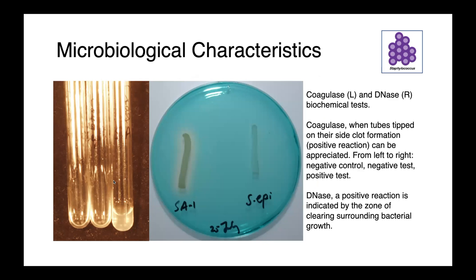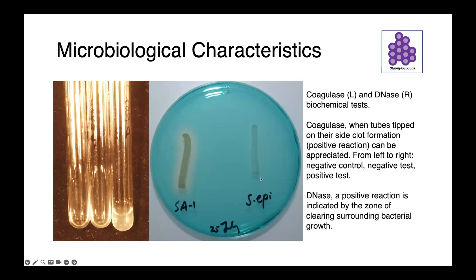Staphylococci are often described as coagulase positive or negative. In the coagulase test, we have rabbit plasma to which we add a small portion of a colony and incubate at 37 degrees. After incubation, we gently invert the tubes and see if there is any formation of a stable clot. On the left and in the middle, when rotated, the plasma flows along the side of the tube with gravity. In the case of Staph aureus on the right, we have formation of a stable clot and that plasma does not flow. The image on the right is a DNase agar plate, which detects the presence of diffusible DNase enzymes that break down DNA. Staph aureus is DNase positive, as indicated by a zone of clearing surrounding the culture, while Staph epidermidis is DNase negative.